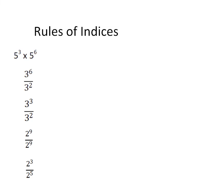Rules of Indices. We're going to firstly recap a few rules of indices from GCSE. Grab your notepad and write out 5 cubed — 5 times 5 times 5 — times 5 to the power 6, which is 6 fives multiplied together.